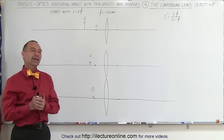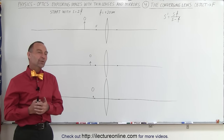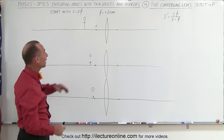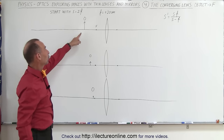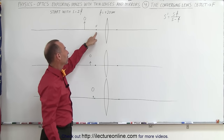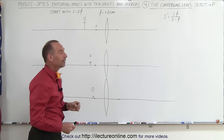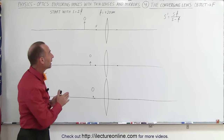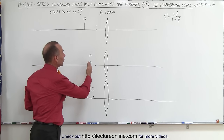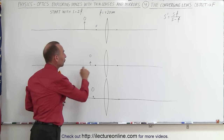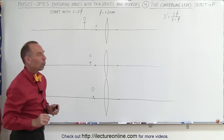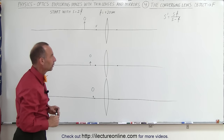Welcome to ElectronLine. We're going to take a converging lens, place the object at twice the distance away from the lens compared to the focal length, and then begin to move the object closer and closer to the focal point to see what will happen.